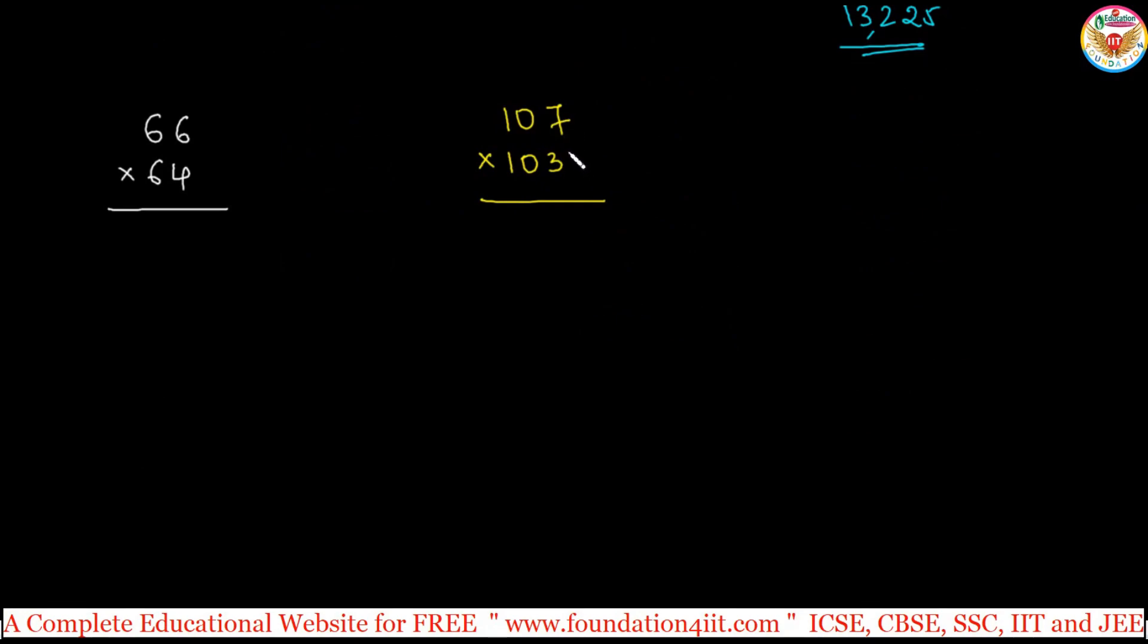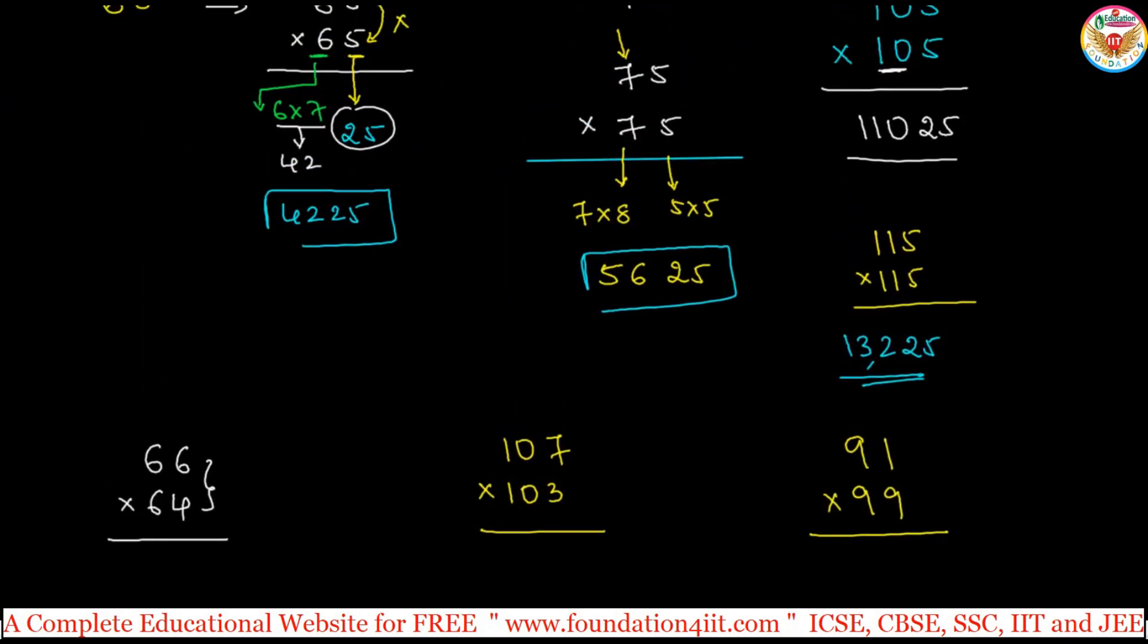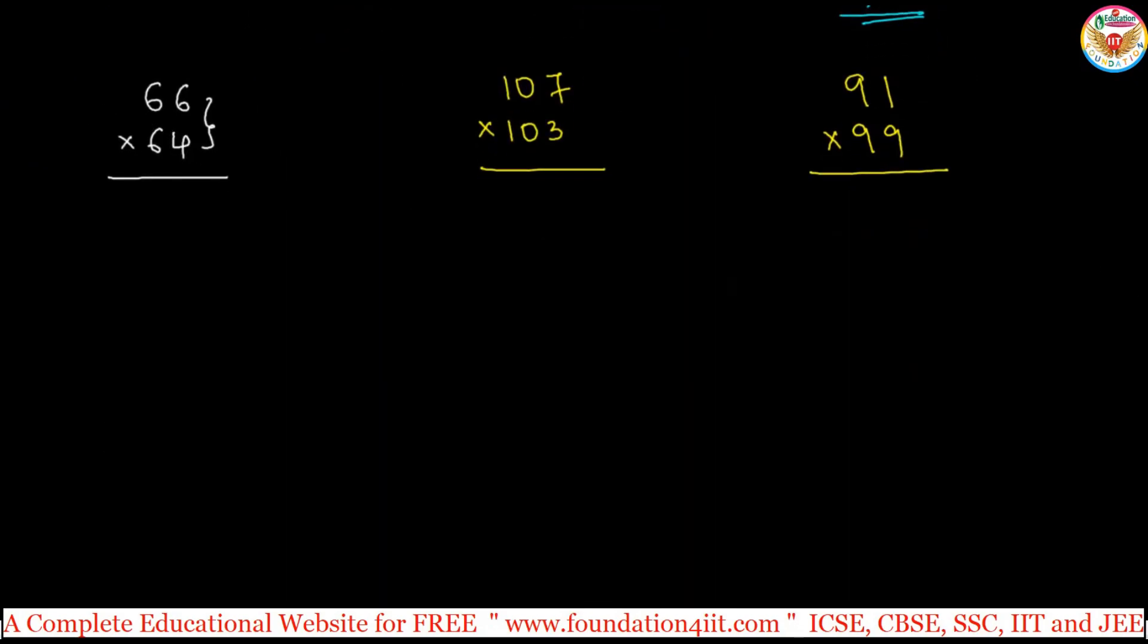Same logic you can apply like 66 into 64 or 107 into 103. Sum of the units digit is 10. 7 plus 3 is 10, 6 plus 4 is 10. 91 times 99, sum of the units place 1 plus 9 is 10, and tens digits are same. Let us apply the same method. According to the previous, we multiply. Previous one was 5 into 5, that is 25. Here we need to do 6 into 4, just multiply 6 times 4. If you multiply, it's 24. Next to this side, 6 is the number, after 6 the next one is 7. 6 into 7 is 42.